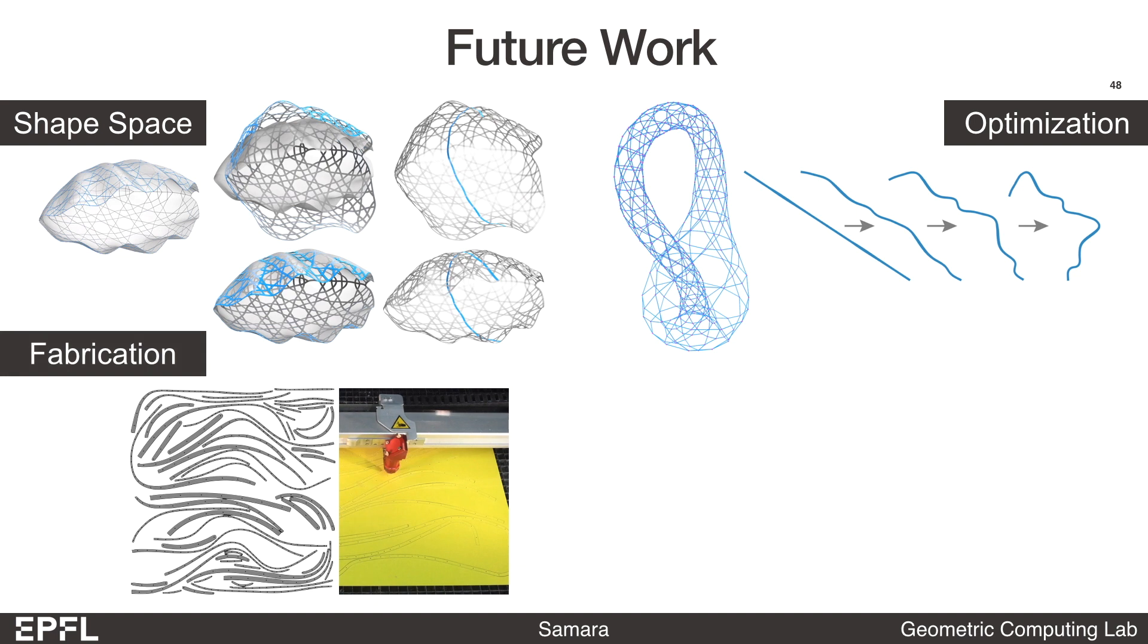During the fabrication process, we had to deal with additional constraints such as the limited dimension of the laser cutting machine. For models with long ribbons, we have to separate them into smaller segments and reconnect them later. This splitting and packing process is currently done manually, and it will be very helpful to have an algorithm to find the best ribbon layout to reduce material waste.